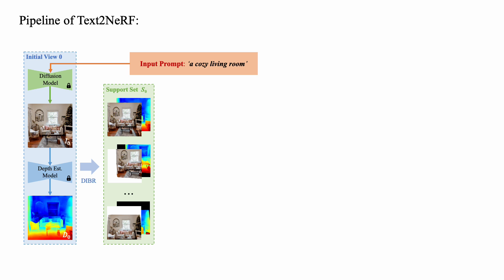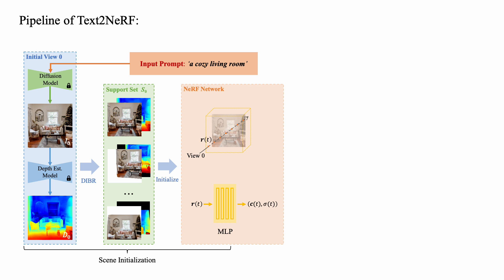The support set containing various views is used as initial training data to initialize the 3D radiance field, NeRF. Afterward, we design a progressive scene inpainting and updating strategy to complete missing regions consistently and update the radiance field to produce visually pleasing and view-consistent results.